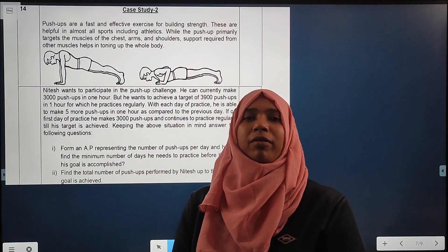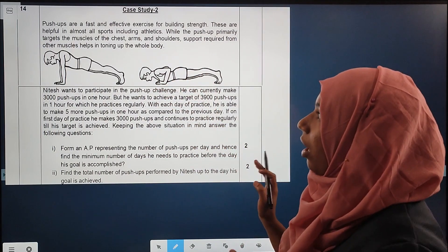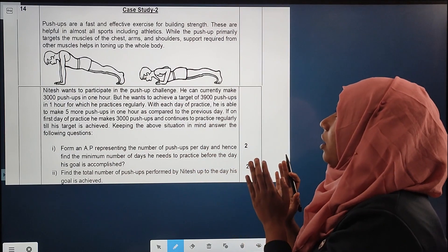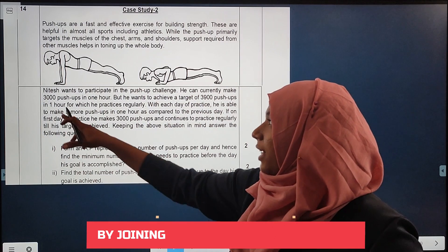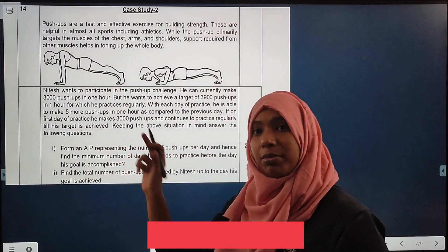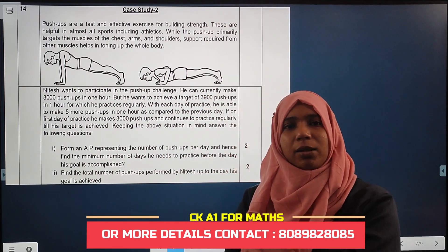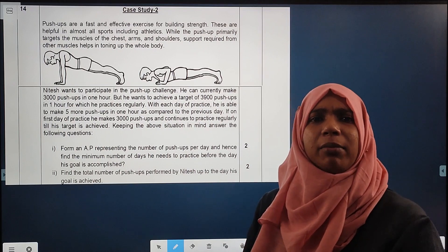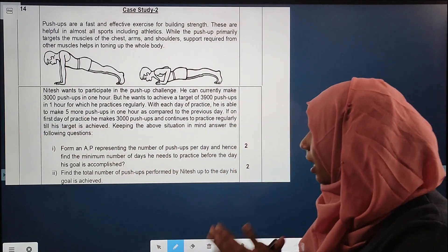This is the last question from our sample paper. Push-ups are fast and effective exercises for building strength, helpful in almost all sports including athletics. While the push-up primarily targets the muscles of the chest, arms, and shoulders, support is required from other muscles to tone the whole body. Nidesh wants to participate in the push-up challenge and he can currently make 3000 push-ups in one hour, but he wants to target 3900 push-ups in one hour.